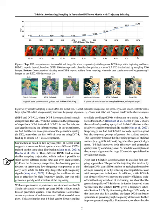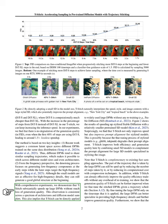Although smaller models might not capture high-frequency details as effectively, they are quite capable of generating a good global structure in the initial steps. Through extensive experiments, we've demonstrated that T-Stitch significantly speeds up the inference process of large DPMs without a noticeable loss in generation quality. This improvement is consistent across a variety of model architectures and diffusion model samplers. Moreover, T-Stitch can be directly applied to popular large DPMs, like stable diffusion, without any need for retraining.